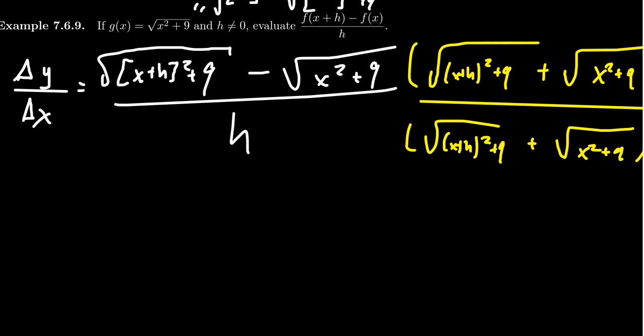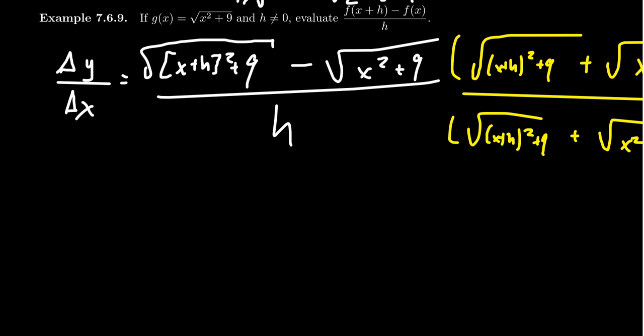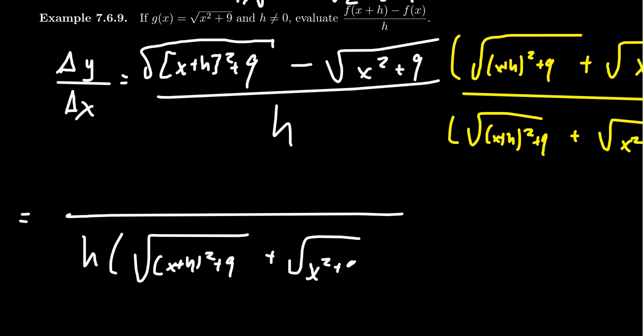So in the denominator, you're going to leave things factored. You never multiply out a denominator. It's not worth it. Don't do it. So the denominator is going to look like h times this big honking thing: the square root of x plus h squared plus 9 plus the square root of x squared plus 9.